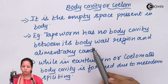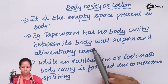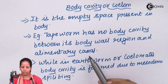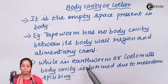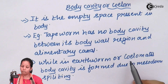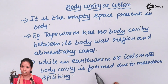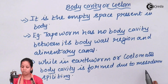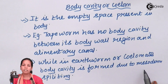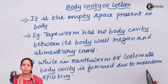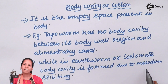Since tapeworm does not have a body cavity between the body wall and alimentary canal, it is acoelomate. Earthworm, which is a farmer's friend, is called a coelomate because it has a body cavity present in it, and this body cavity is formed due to mesoderm splitting. Mesoderm is one of the three germ layers — endoderm, ectoderm, and mesoderm — and mesoderm helps in the formation of the body cavity in earthworm.